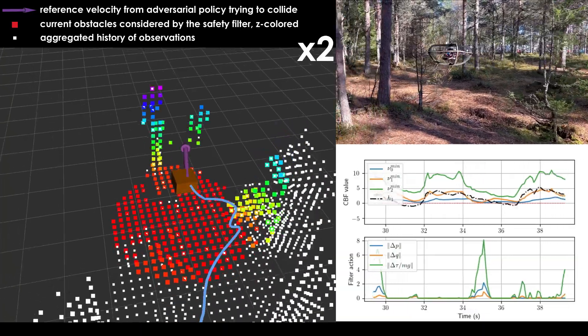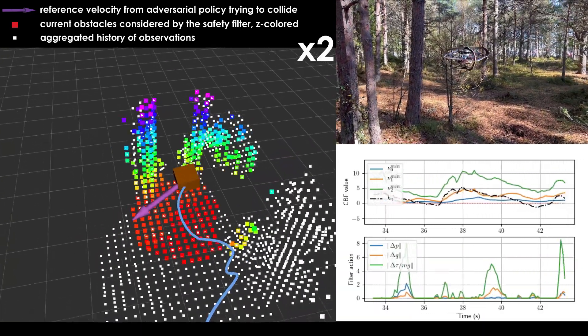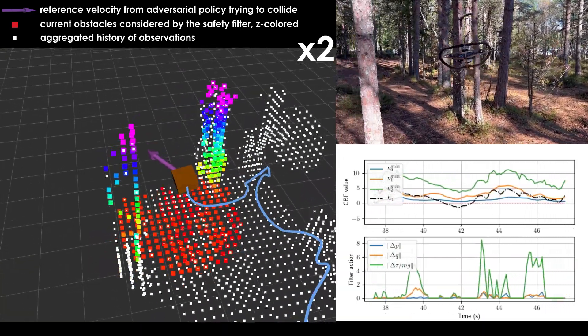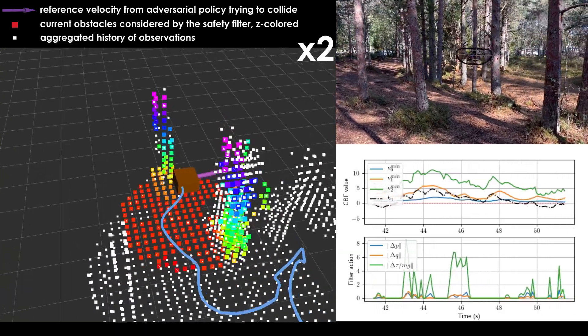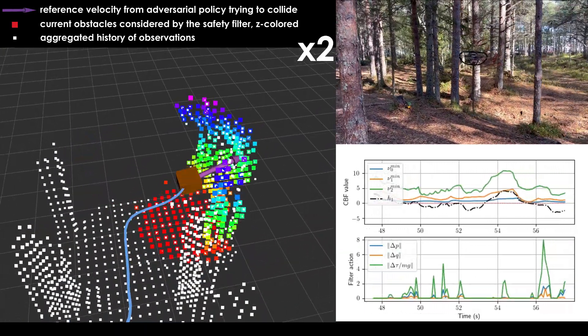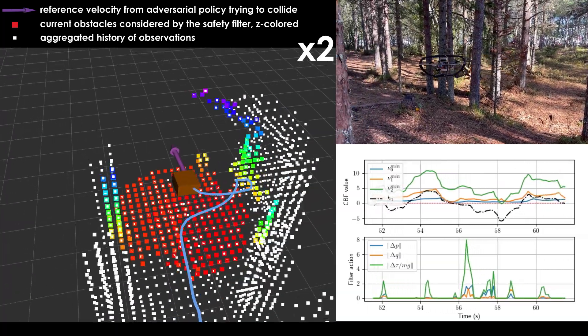The present wind and modeling errors cause the value of the composite control barrier function to drop below the zero line. Regardless, all constraints are satisfied during the entire mission. This is indicated by the value of nu0 on the right.